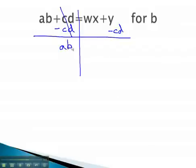Now, we have ab equals... Notice there are no like terms on the right side, so we just treat this as a long addition problem. wx plus y minus cd.